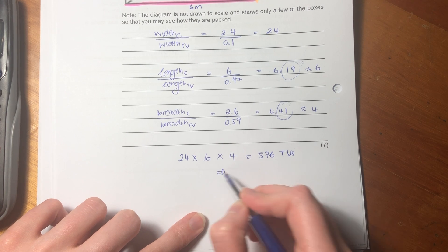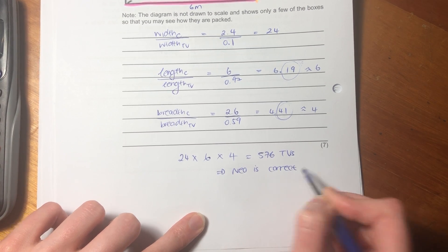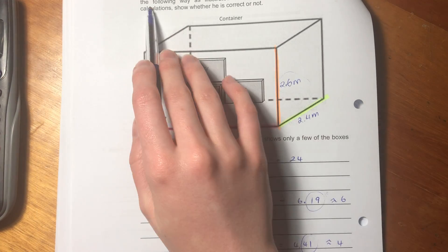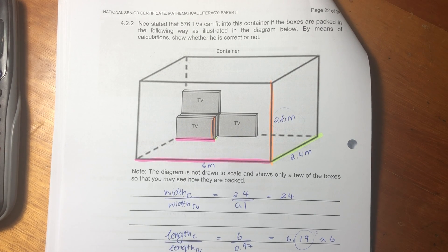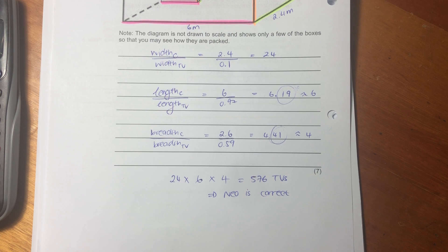So the total number of TVs that can be packed is 576. We can say here, Neo is correct. And this is something often we forget. They ask us to corroborate or substantiate or give a reason or calculation as to why someone is right or correct or incorrect. He is correct. But we've done the calculation, but we need to say at the end of the calculation, yes, he's correct. Otherwise, doing the calculation means nothing. You actually have to answer the question.